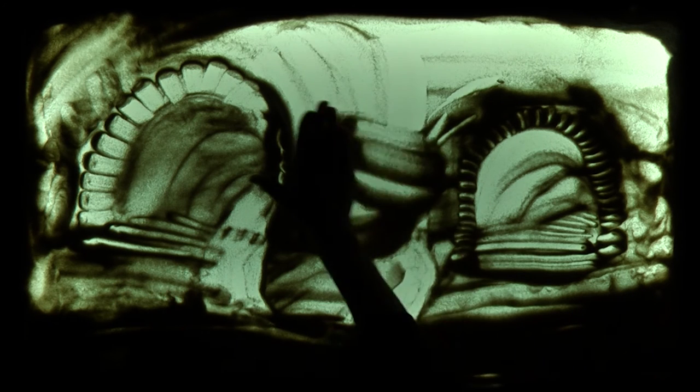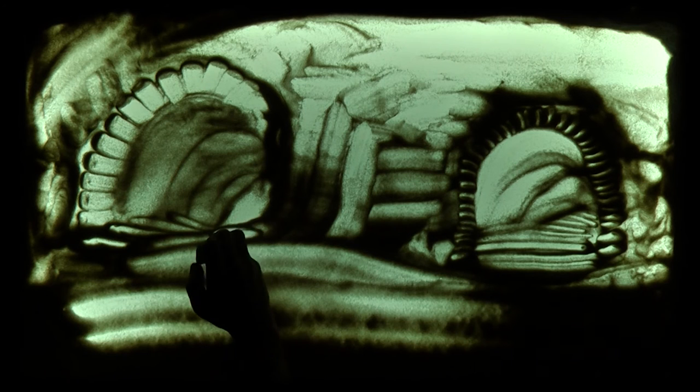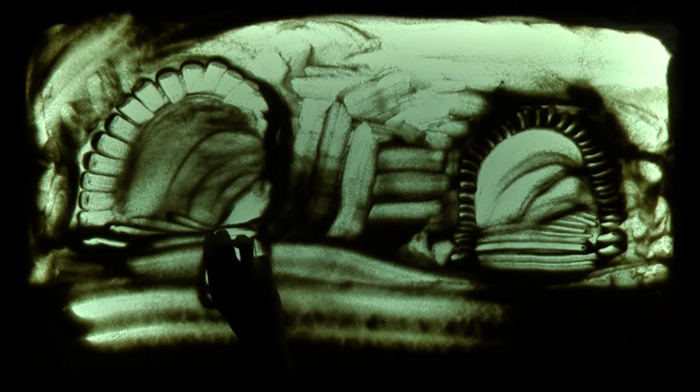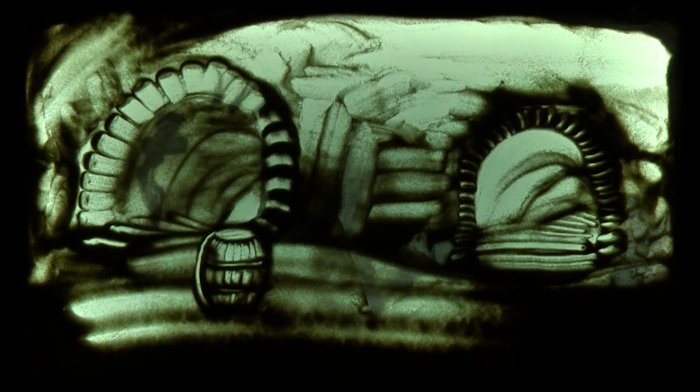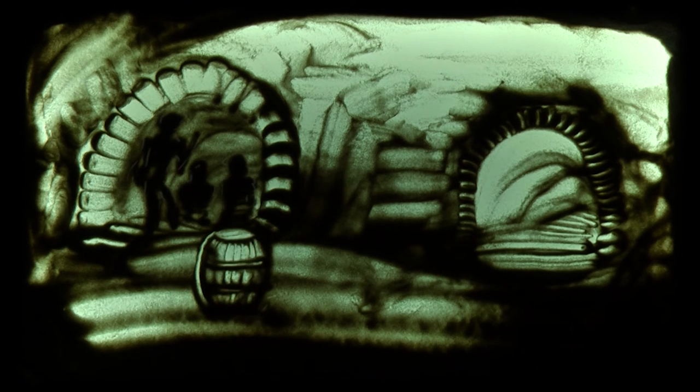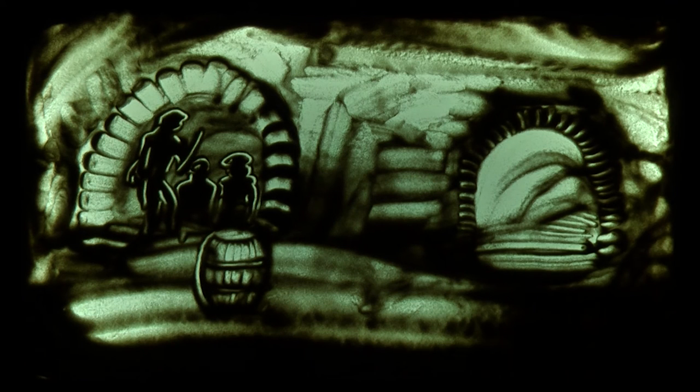До розвилки потаємного входу Іван підкотив барильця з порохом. Вночі, коли туди наблизились яничари, Оксана, згідно з умовним знаком, високо підняла свічку і різко опустила вниз, підпаливши гнота та відкинувши свічку у ворожий бік.